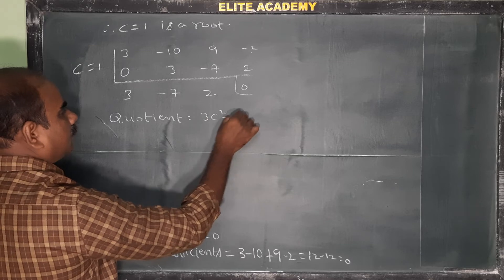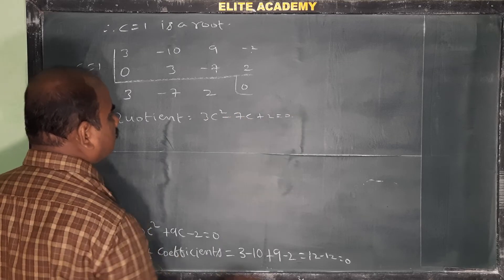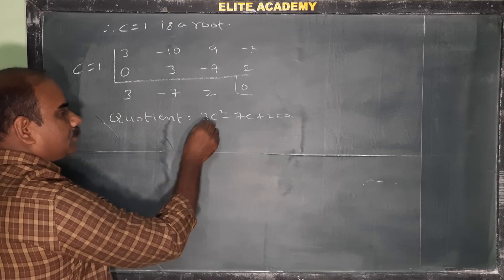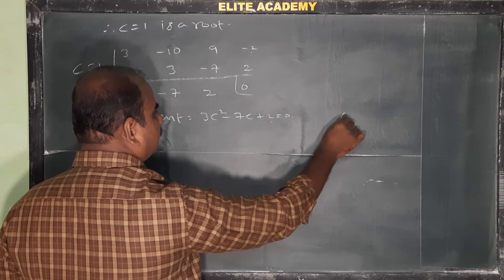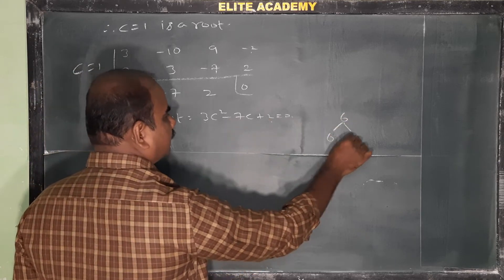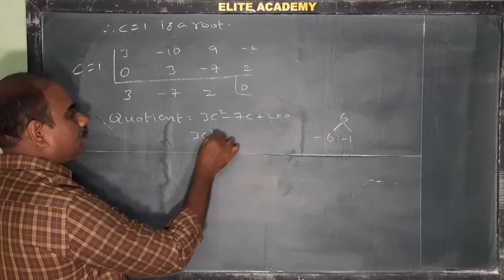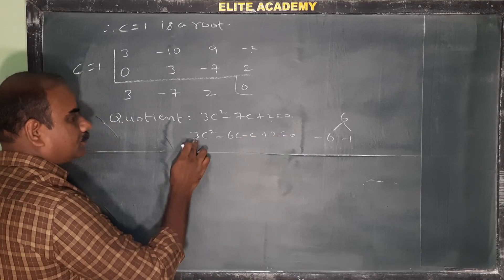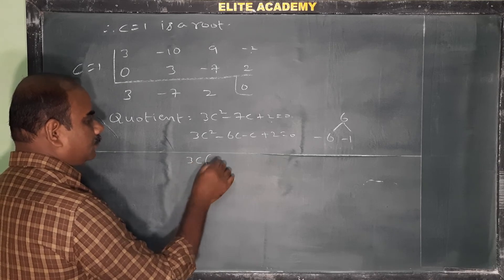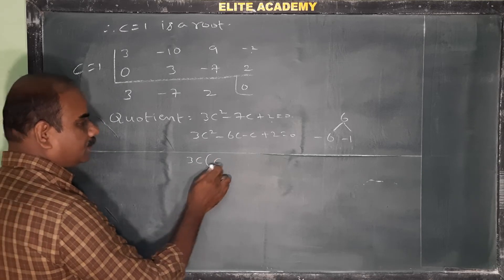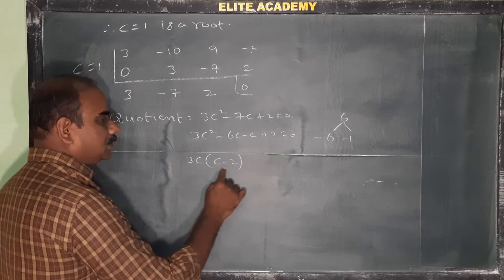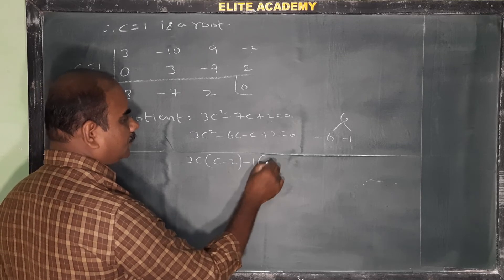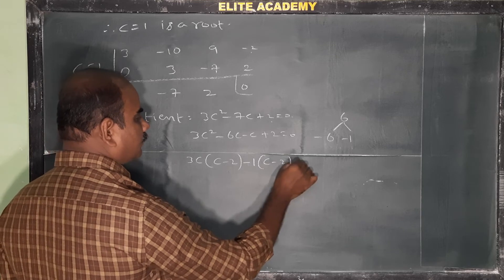The quotient from synthetic division is 3c² - 7c + 2 = 0. Factoring: 3×2=6, factors of 6 that sum to -7 are -6 and -1. So 3c² - 6c - c + 2 = 0, giving 3c(c - 2) - 1(c - 2) = 0, therefore (c - 2)(3c - 1) = 0.